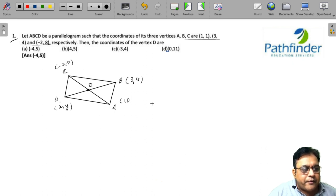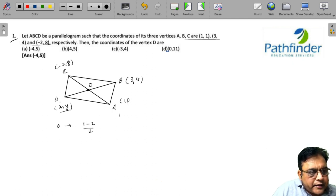Let us call it point O. What is the coordinate of midpoint of AC? It is (x₁+x₂)/2 and (y₁+y₂)/2. This should be (1-2)/2, (1+8)/2. So the coordinates of point O will be (1-2)/2, (1+8)/2, these will be the coordinates.